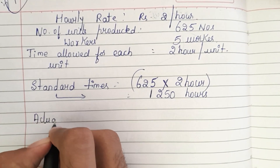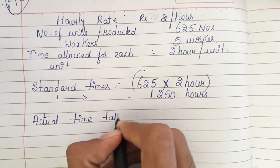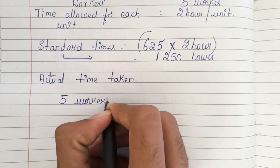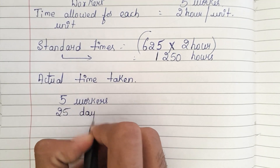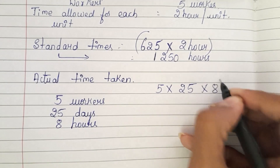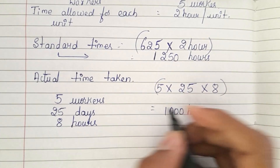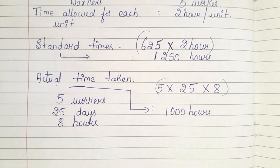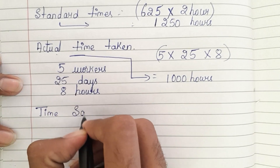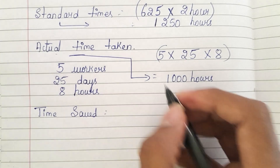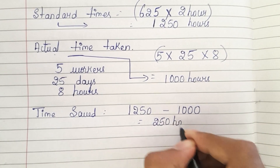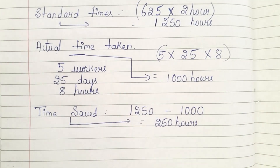Now let us calculate the actual time taken. There are 5 workers working for 25 days at 8 hours per day: 5 × 25 × 8 = 1000 hours. So actual time taken is 1000 hours. Time saved = 1250 − 1000 = 250 hours.